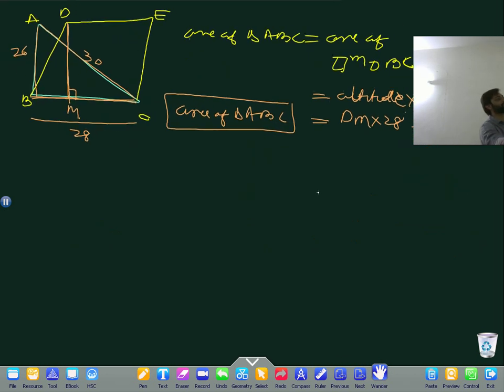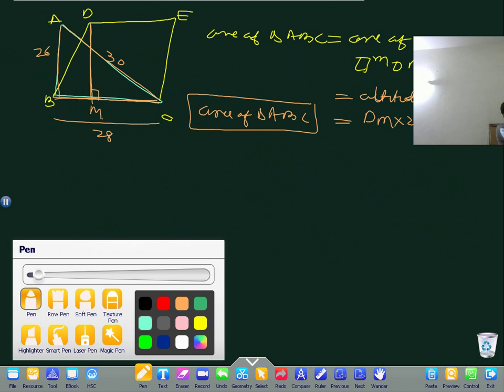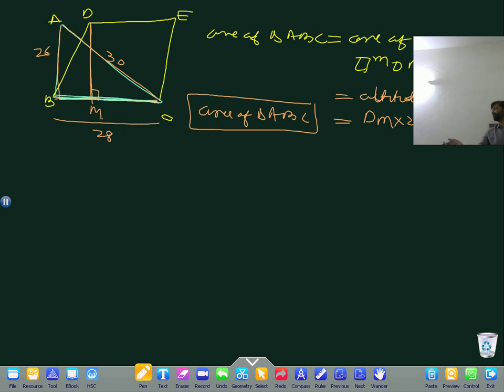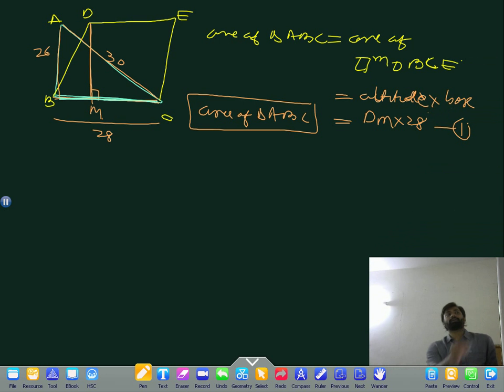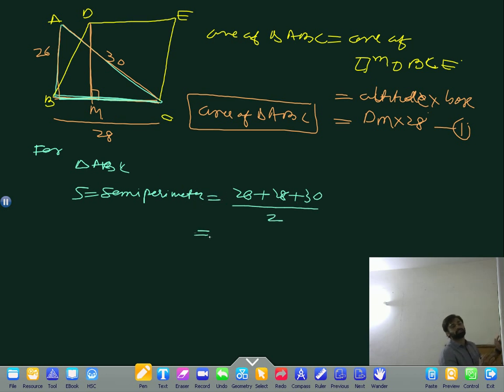Now using Heron's formula, we will first calculate area of ABC. Both have the same base, which is 28. For the parallelogram, we know one quantity, the base. We have to find the altitude. In order to solve this altitude part, you have to get the area of triangle ABC. S equals semi-perimeter, which equals 26 plus 28 plus 30 divided by 2, which equals 84 divided by 2, which equals 42 centimeters.